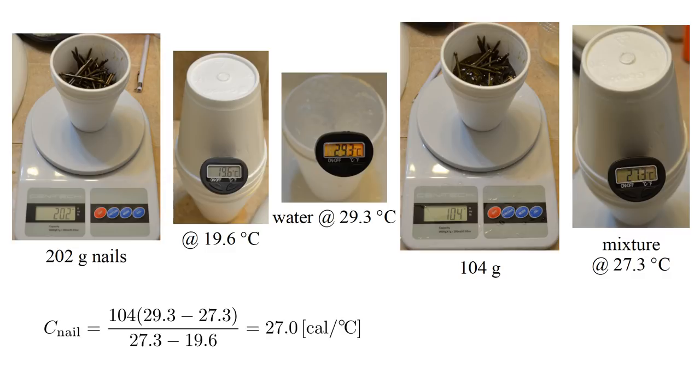This gives a heat capacity of 27 calories per degree Celsius. Dividing this by the nails 202 gram mass, we find a specific heat of 0.134 calories per gram degree Celsius.